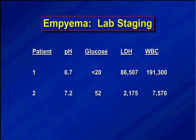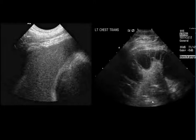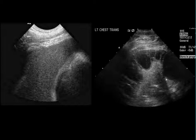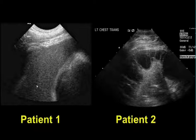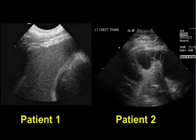To show an example: patient one has low pH, low glucose, high LDH, and high white cell count — looks really bad. Patient two has good pH, good glucose, looks much better. But looking at ultrasound, the first patient has echogenic fluid with no loculations, so it will come out easily with a tube. Whereas the second patient has all kinds of loculations — you put a tube in and nothing's going to come out. This patient with bad lab values actually has pus in the pleural space, but the patient with good lab values is actually much more difficult to drain.